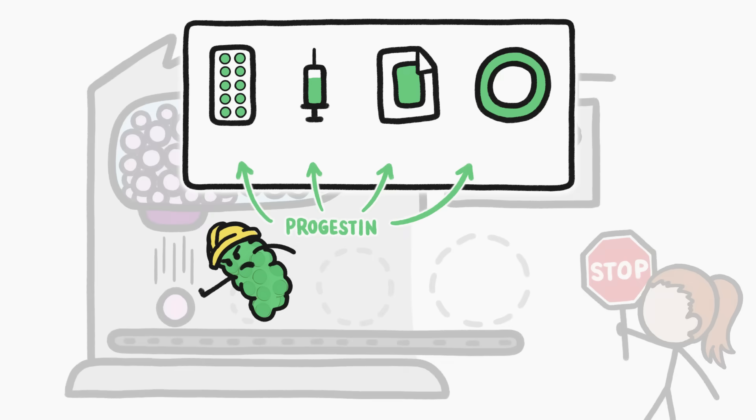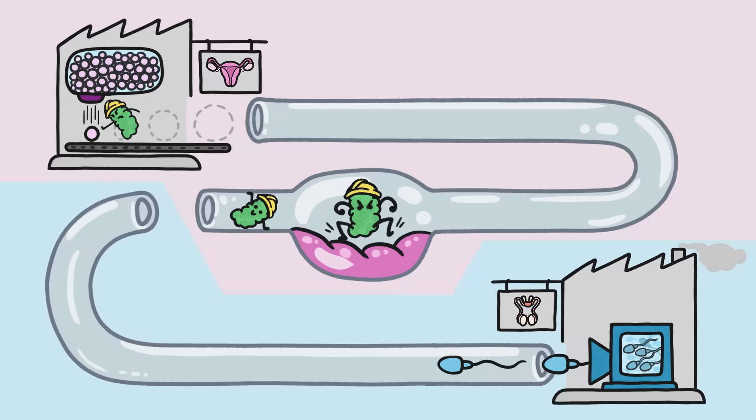That's how a lot of common forms of birth control work, like birth control pills, shots, patches you put on your skin, and rings you insert. When they're used correctly, these egg blockers are super effective, especially since they also disrupt a few other parts of the process.